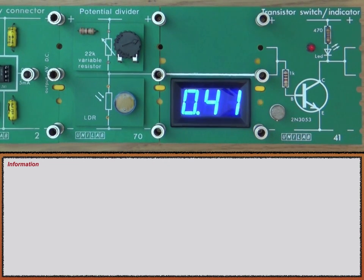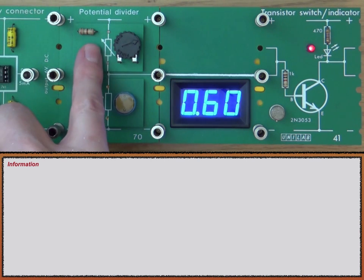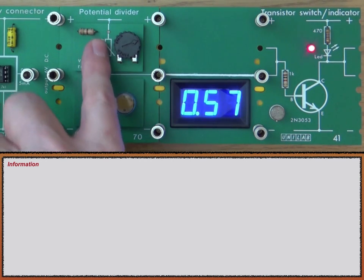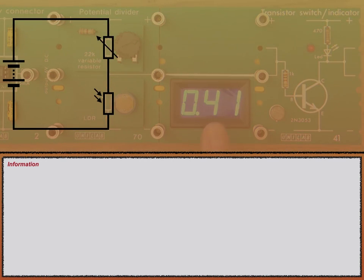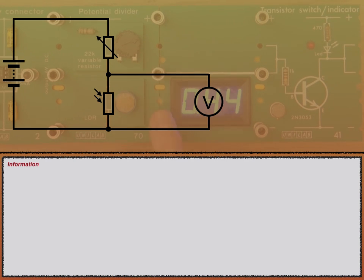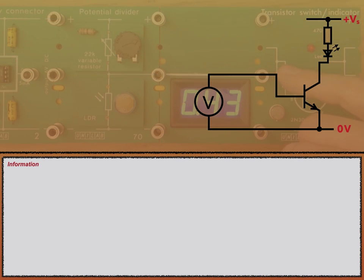In this video I'm going to be talking about transistor switching circuits with LDRs. Over here I have a battery connector and two components: a variable resistor at the top and an LDR at the bottom of a voltage divider. This voltmeter is measuring the voltage across the bottom component, which is the LDR. This is a very important voltage because the voltage across the bottom component in our voltage divider is also the voltage between the base and the emitter of our NPN transistor.